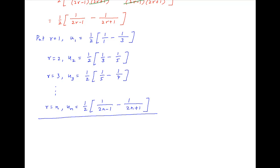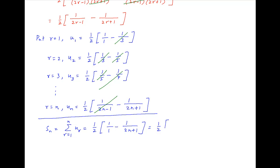Now we add all of these equations. The left hand side is equal to the sum of the first n terms of the given series, denoted by Sn. On the right hand side, alternate terms cancel and we are left with only two terms, which is therefore equal to half of in brackets 1 minus 1 upon 2n plus 1. This equals half of 2n plus 1 minus 1 divided by 2n plus 1. One cancels in the numerator, and therefore the sum to n terms Sn is equal to n upon 2n plus 1, which is the required answer.